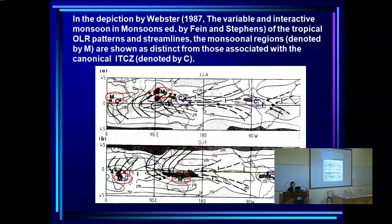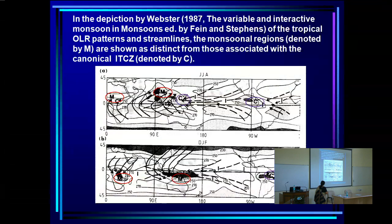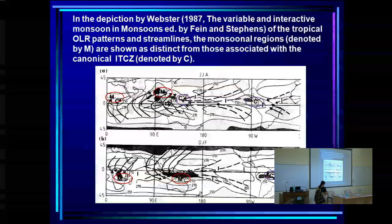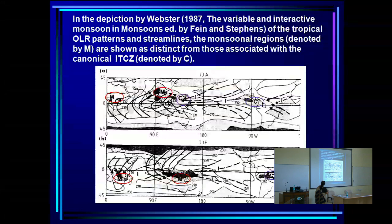This is a depiction by Webster in 1987, found in a book by Fein and Stephens. He has marked regions with converging winds: M for monsoonal regions and C for ITCZ regions. So he also distinguishes a monsoonal region from a typical ITCZ region.